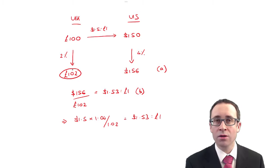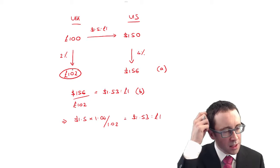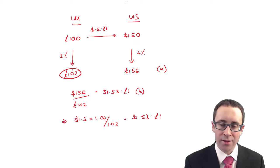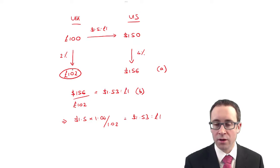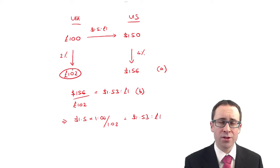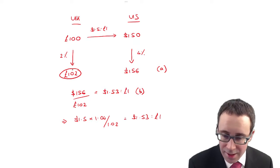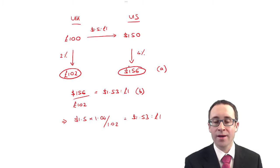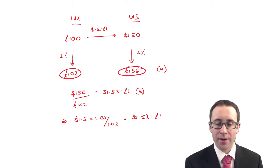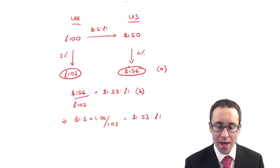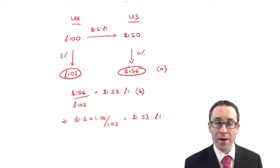The US dollars part was a little bit more tricky. If it was £100 at $1.50 to the pound, that's equivalent to $150. If that increases due to inflation at 4%, you multiply 150 by 1.04, which gives you $156. So part A gives you £102 and $156.